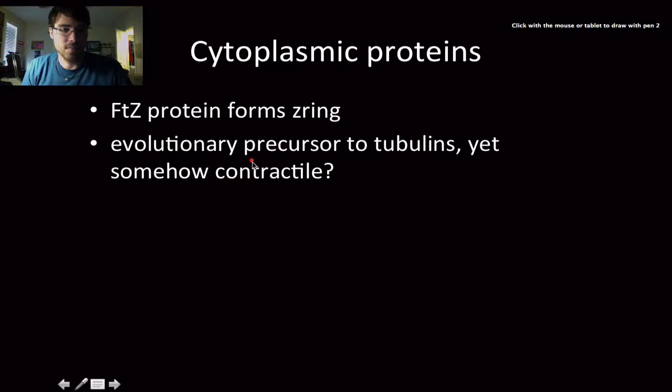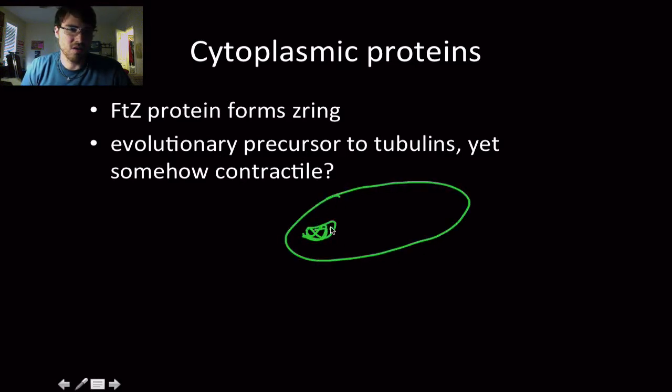So the FtsZ protein and its role that it has to play. Let's say we have a bacteria here. Most of you probably aren't too familiar with the FtsZ protein and its role of forming a Z-ring, but you are probably familiar with the cleavage furrow that actin filaments form during eukaryotic mitosis and meiosis. This is a very similar, functionally similar process here. The FtsZ protein forms the Z-ring. Structurally, this is an evolutionary precursor to tubulins which form microtubules, yet it's somehow contractile.